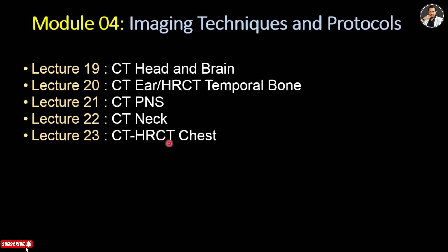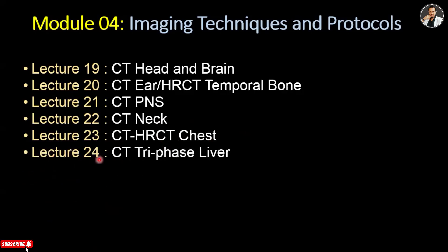Lecture 23 is CT and HRCT chest — a very common and important tutorial. We will learn how to do a CT scan of the chest and HRCT chest, the techniques, how to plan and print. Lecture 24 is about triphasic liver CT — a very important CT scan. Liver CT is taken with contrast, and the triphasic CT scan includes arterial, portal venous, and delayed phases.